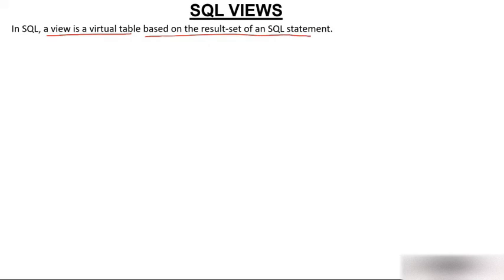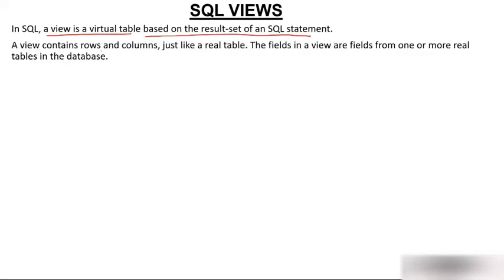What you create is an image of a table. That table is known as a virtual table and it is known as a View. A View contains rows and columns, just like a real table. The fields in the View are fields from one or more real tables in a database.